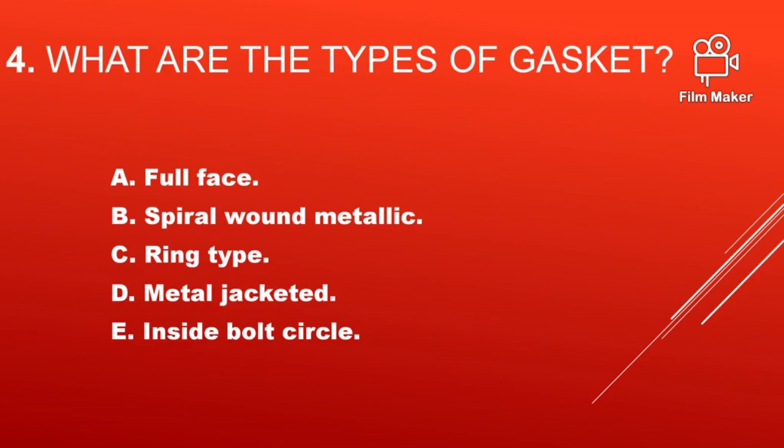What are the types of gaskets? They are: full face gasket, spiral wound gasket, ring type gasket, metal jacketed gasket, and inside bolt circle gasket.